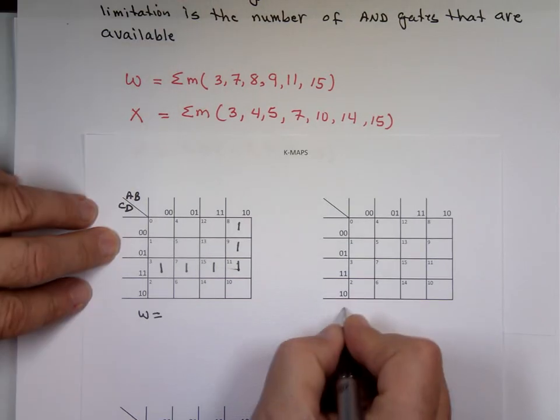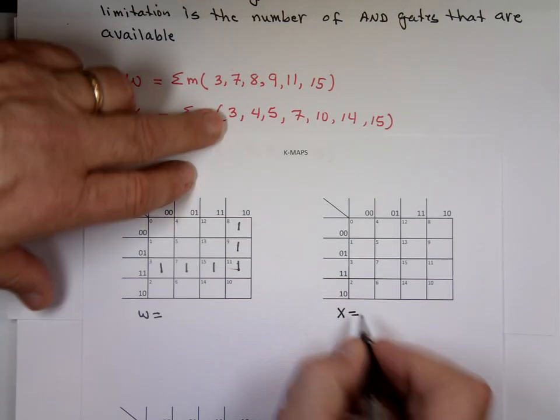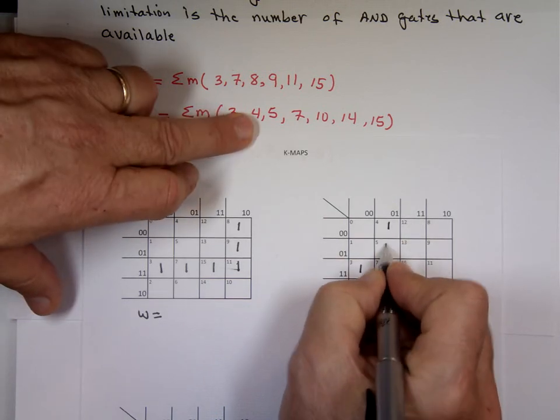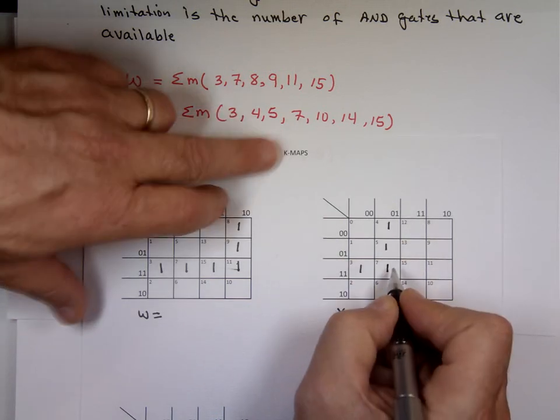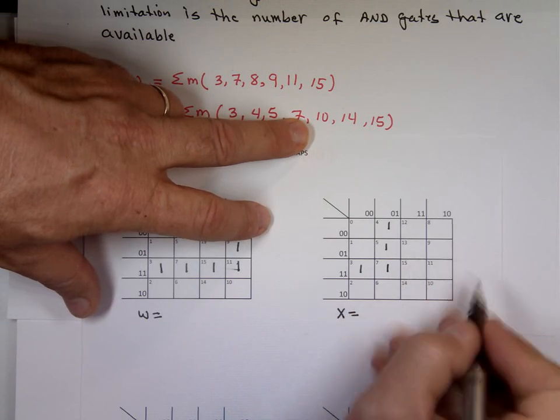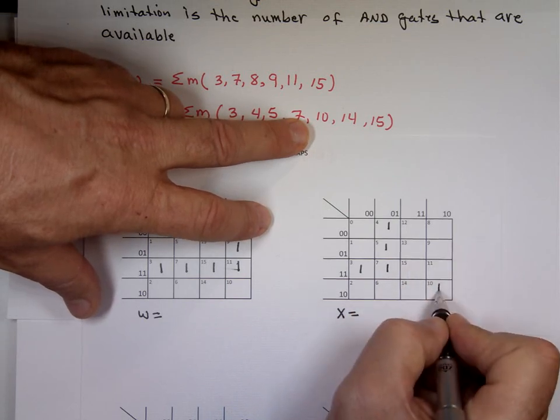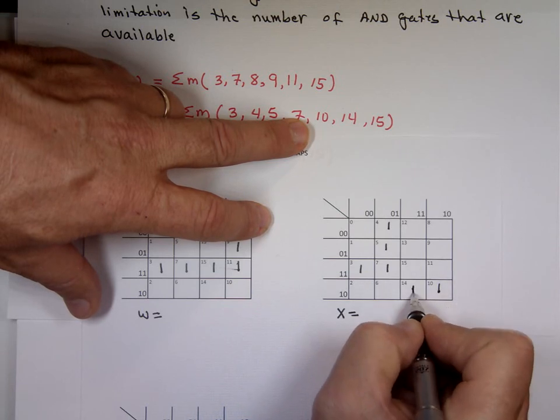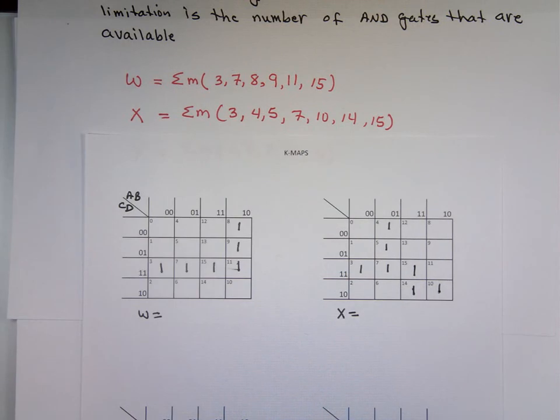Because I'm limited by the number of AND gates. X here equals 3, 4, 5, 7, 10, 14, and 15. Again, I'll be patient with that.